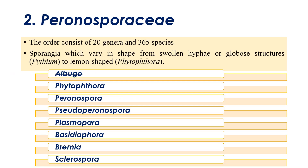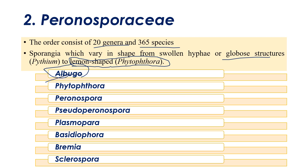Albugo is finished. The first family is done. The second family is Peronosporaceae. Peronosporaceae contains around 20 genera and around 365 species. Generally the sporangia vary in size and shape — for example, Pythium produces globose sporangia while Phytophthora produces lemon-shaped sporangia. The important genera in Peronosporaceae are Phytophthora, Peronospora, Pseudoperonospora, Plasmopara, Basidiophora, Bremia, and Sclerospora.